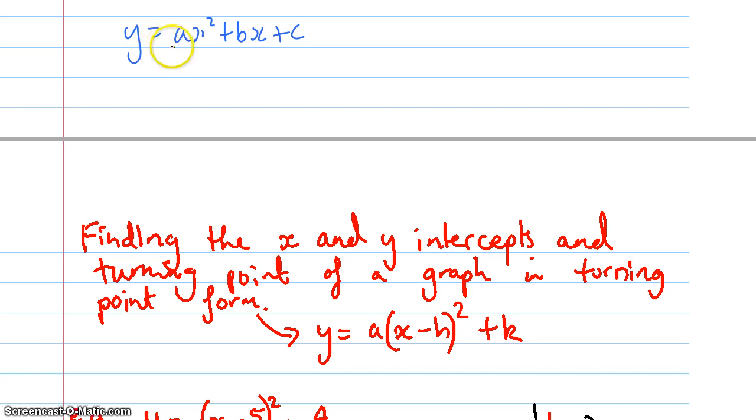Intercept method was when we had y = ax² + bx + c, and we factorized that and made it equal zero to find the x-intercepts. We knew the y-intercept and we found the turning point.